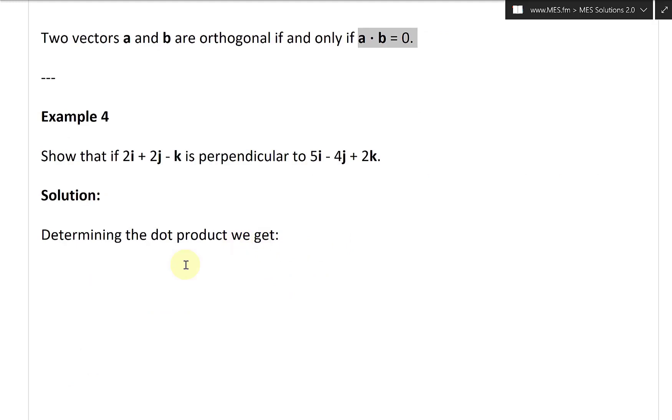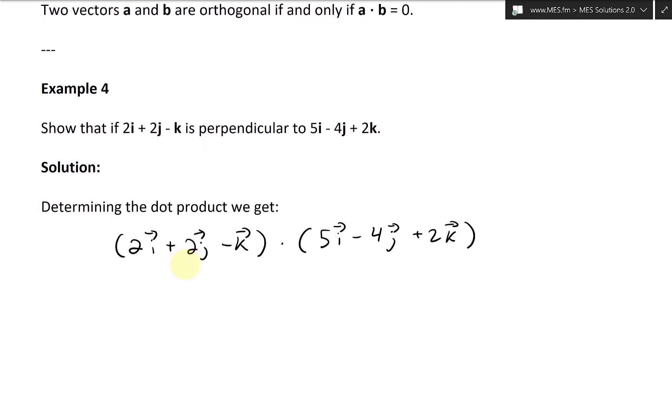All right, let's take a look at this dot product. I'm just gonna write this like this, 2, put this in regular brackets, the vectors are already inside, plus 2i, plus 2j, minus k vector, at least on top, and then dot 5i vector minus 4j vector plus 2k vector like this.